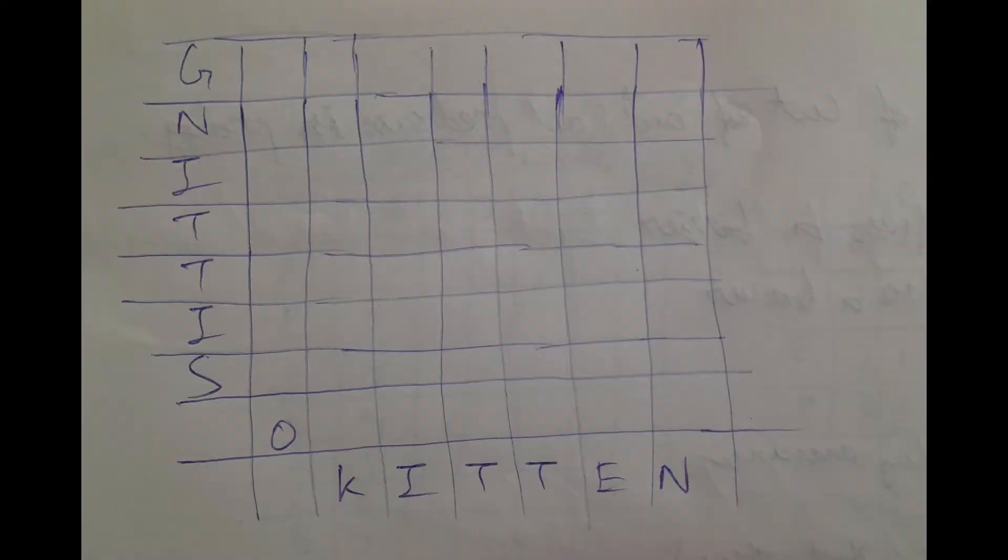Now let's start with some examples. The assigned task is to convert the word from sitting to kitten. First we should write the words in a matrix representation. Starting from zero, we number them.